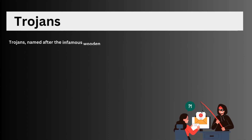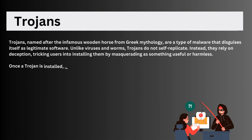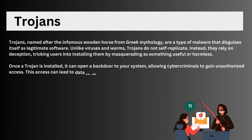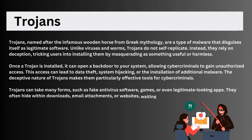Trojans, named after the infamous wooden horse from Greek mythology, are a type of malware that disguises itself as legitimate software. Unlike viruses and worms, Trojans do not self-replicate. Instead, they rely on deception, tricking users into installing them by masquerading as something useful or harmless. Once a Trojan is installed, it can open a backdoor to your system, allowing cybercriminals to gain unauthorized access. This access can lead to data theft, system hijacking, or the installation of additional malware. The deceptive nature of Trojans makes them particularly effective tools for cybercriminals.